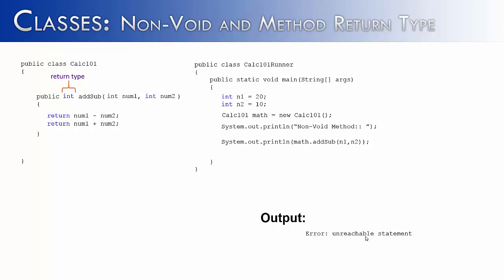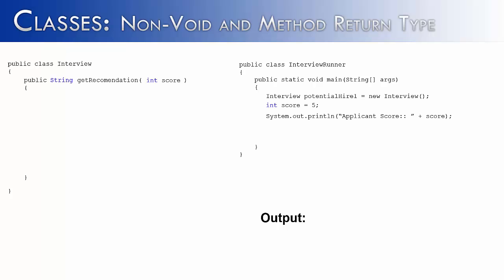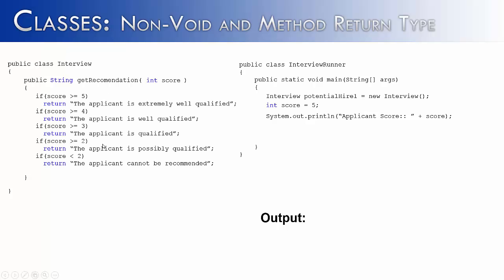There is a way to use multiple return statements inside of a method. I've written two classes: interview and interview runner. An interviewee is going to receive a score — in this case a 5 — and then the program is going to recommend whether to hire the person based on a series of if statements. The if statements each have the keyword return inside of them. Only if a particular condition is true will it return that value — if they get a 5 or higher, the applicant is 'extremely well qualified'.